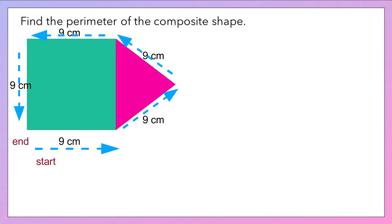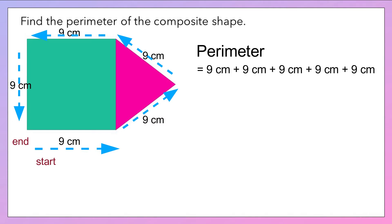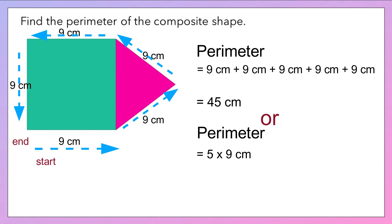Now total up the length of all the outer sides. When you add up all the sides you will get 45 centimeters. Since all the sides have the same length — that is 9 centimeters — and we have five equal sides, you can also find the perimeter by multiplying 5 with 9 centimeters to get 45 centimeters.